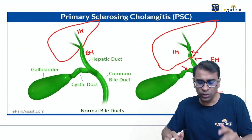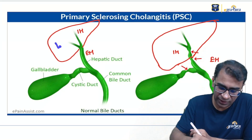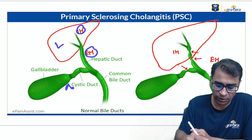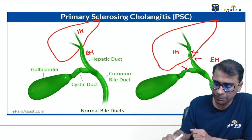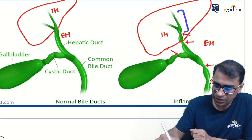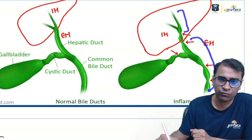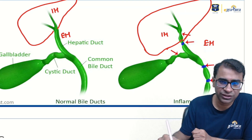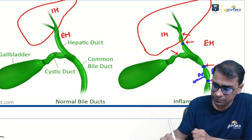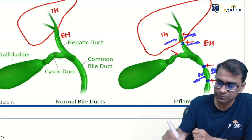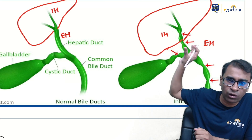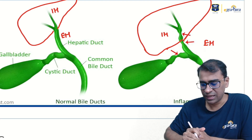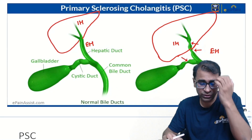Let's look at the PSC first. The liver has intrahepatic and extrahepatic bile ducts — this is normal. What happens in PSC is that both intra- and extrahepatic bile ducts are involved. The involved parts, shown by arrows, become constricted, while the normal segments become dilated.